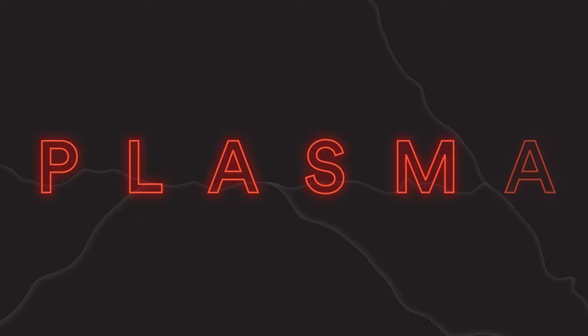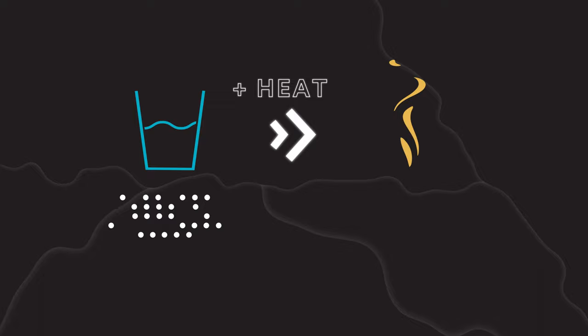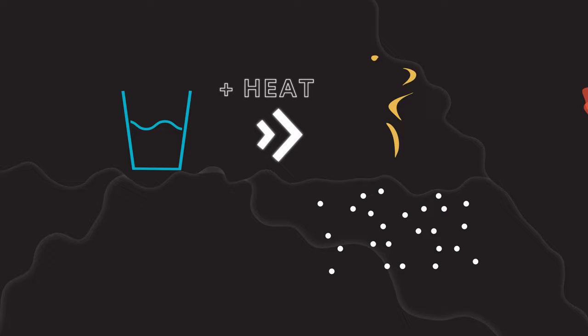Plasma is often referred to as the fourth state of matter. You're probably already familiar with solid, liquid, and gas. Well, as you know, once you add enough heat to a solid, the solid will eventually melt and become a liquid. If you add more heat to the liquid, the liquid will vaporize and become a gas. And, as you'd expect, if you add enough heat to the gas, the gas particles become so energized that the electrons are stripped away from the atoms, forming an electrically conductive gas called a plasma.